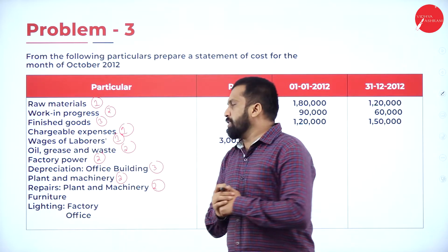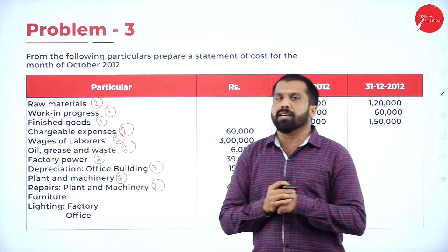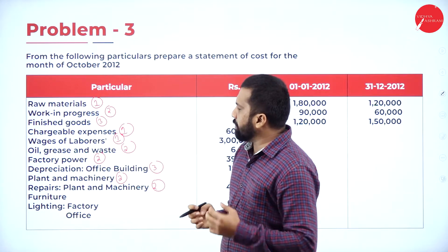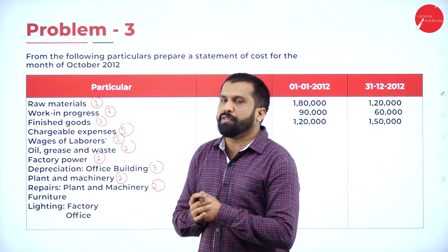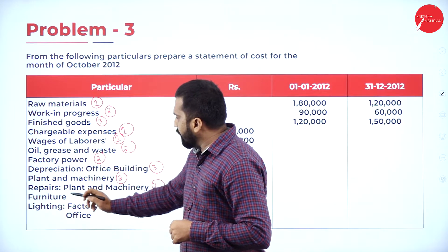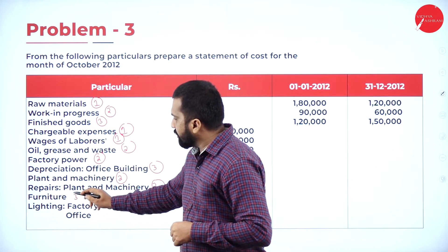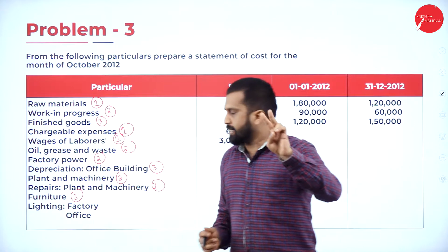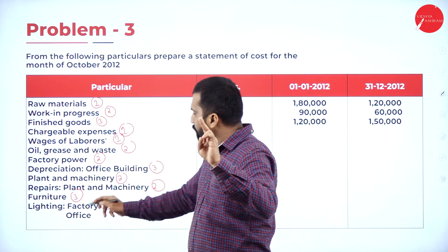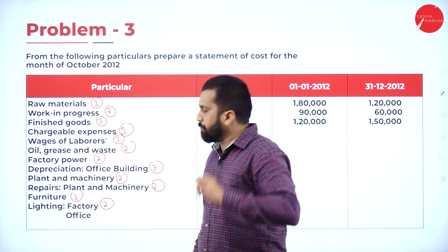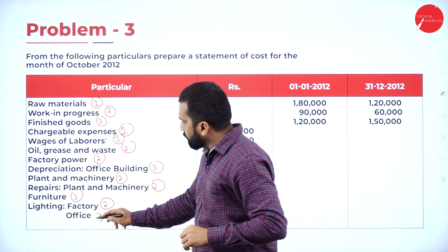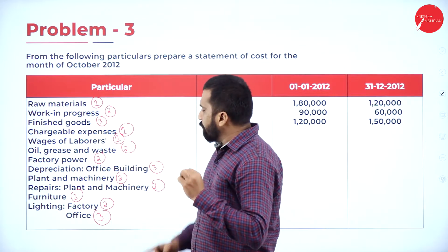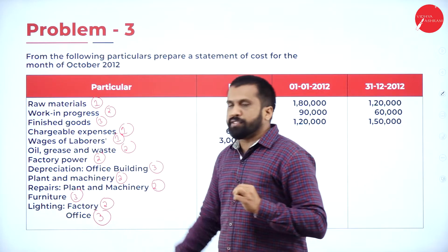Furniture comes under office — whether there is depreciation or repairs on furniture, we use it in the office, so it is category 3. Lighting of factory — factory mentioned, so it is category 2. Lighting of office — office mentioned, so it is category 3. There are two lighting expenses: one for factory goes to 2, and one for office goes to 3.